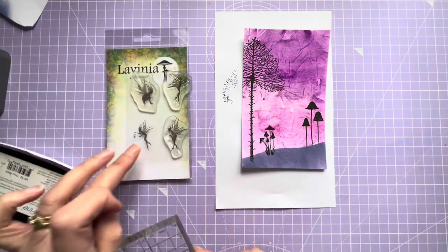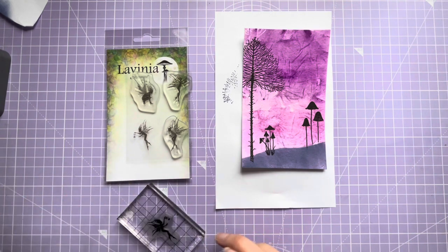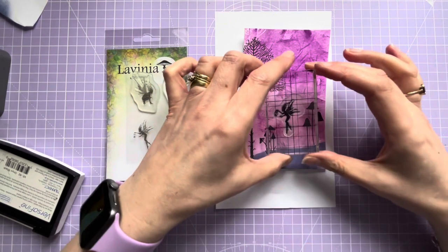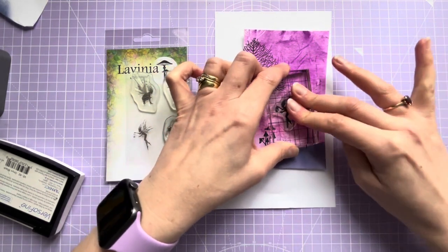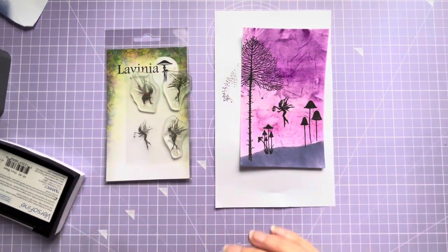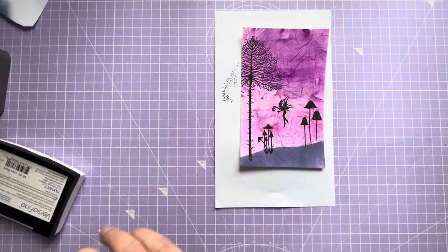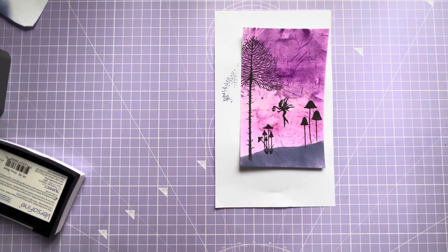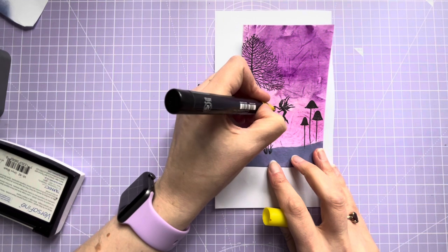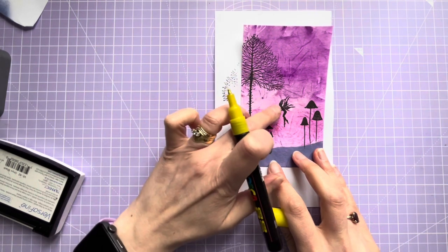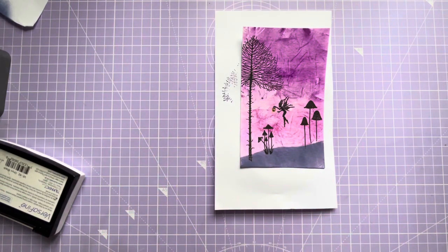And then I have the fairy, the foragers. I love the little one with the lamp, so I think we're going to see if we can position her maybe about there. And then I do like to use the Posca pen just to sort of put a little illusion that there's some light coming from that little lamp.